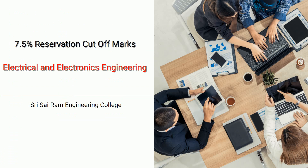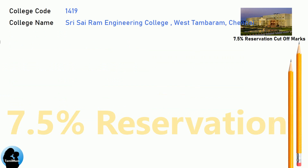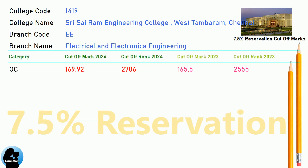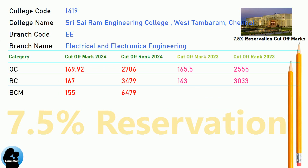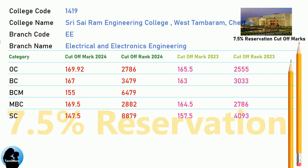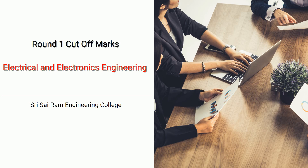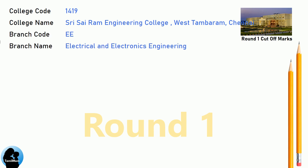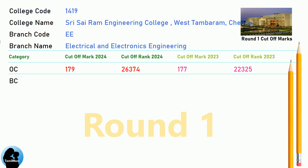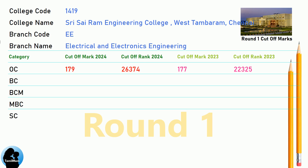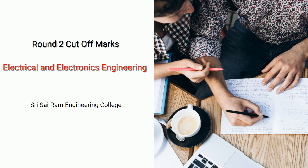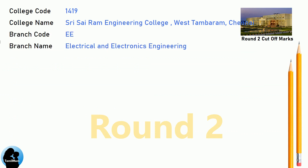DNA 7.5 Reservation Cut-off for Shri Sai Ram Engineering College in Electrical and Electronics Engineering. DNA Round 1 Cut-off for Shri Sai Ram Engineering College in Electrical and Electronics Engineering. DNA Round 2 Cut-off for Shri Sai Ram Engineering College in Electrical and Electronics Engineering.